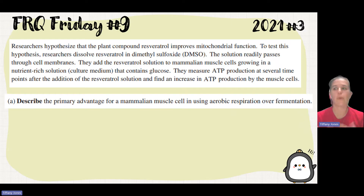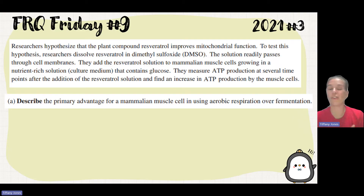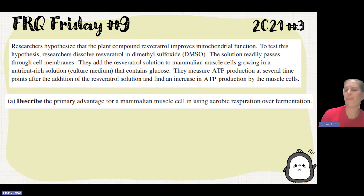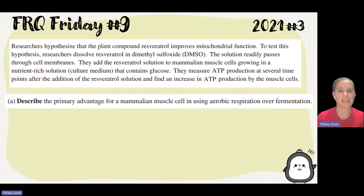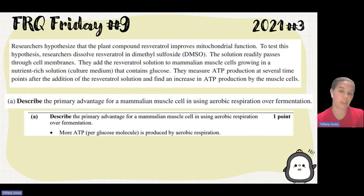You have to think: what happens in aerobic respiration? We go through glycolysis and produce two ATP, we go through the Krebs cycle and produce another two ATP, and then we go through oxidative phosphorylation, which produces 34 to 36 ATP molecules. So with aerobic respiration, we make 36 to 38 ATPs. But in fermentation, we only make the two ATPs from glycolysis, because the point of fermentation is to regenerate the NAD+ needed to hold electrons as you oxidize glucose. So the advantage is that we produce more ATP molecules with aerobic respiration.